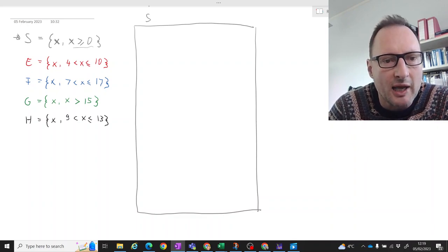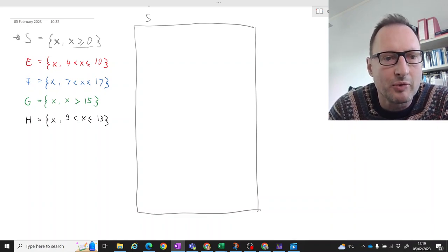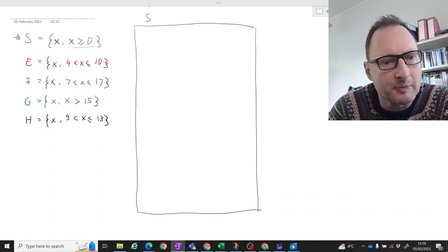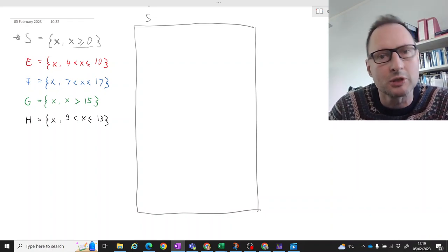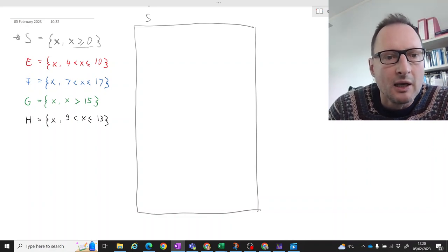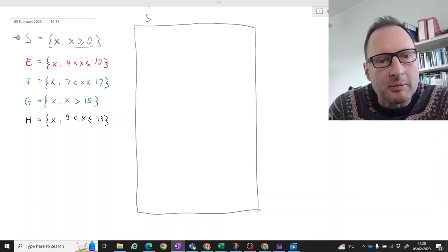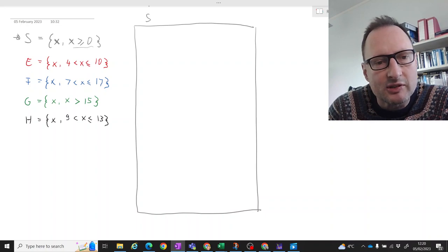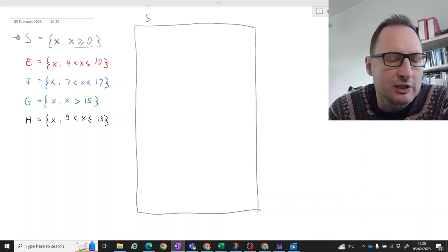And actually, let's jump to H. It's defined in the same way that event H is the event that x takes a value between 9 and 13, but not including 9. G is slightly different because here the event is that x takes just a value larger than 15.